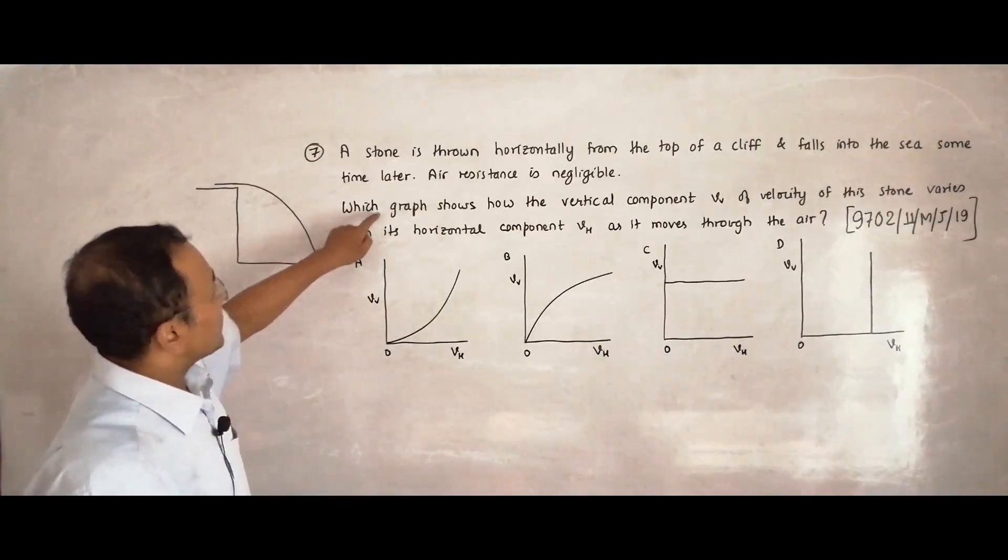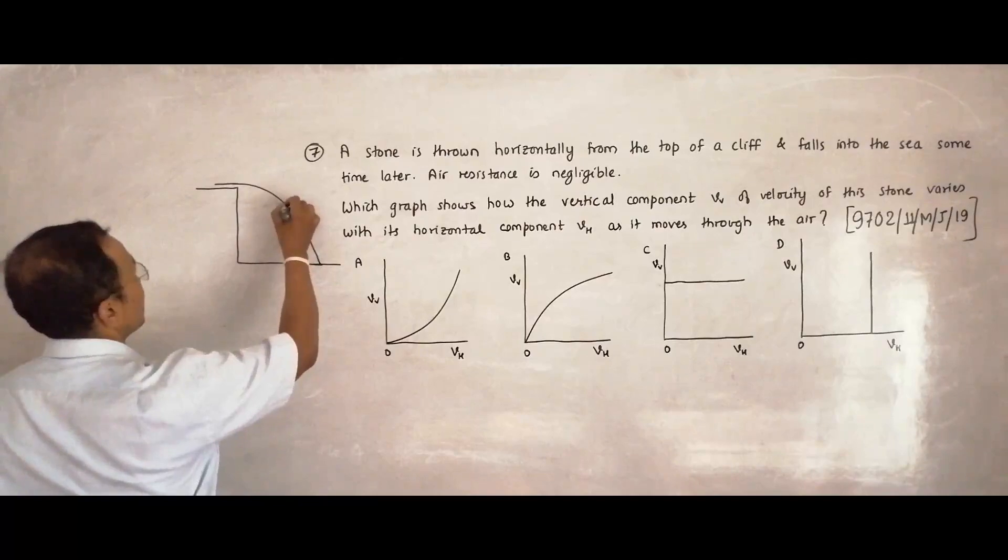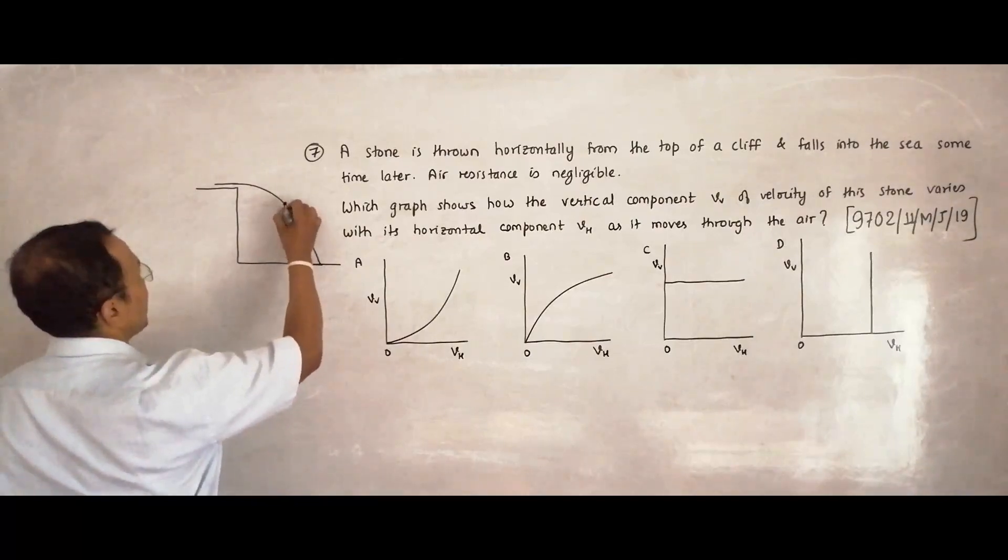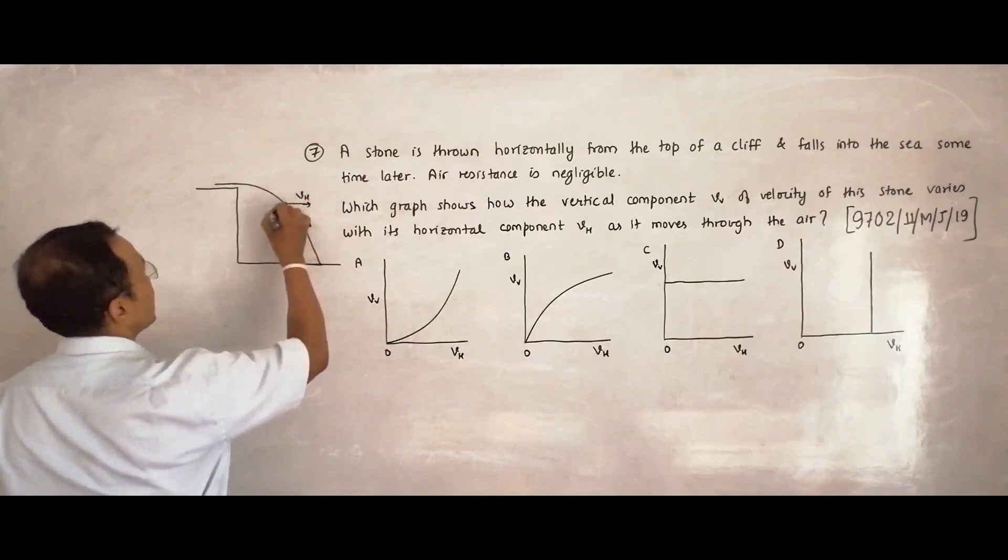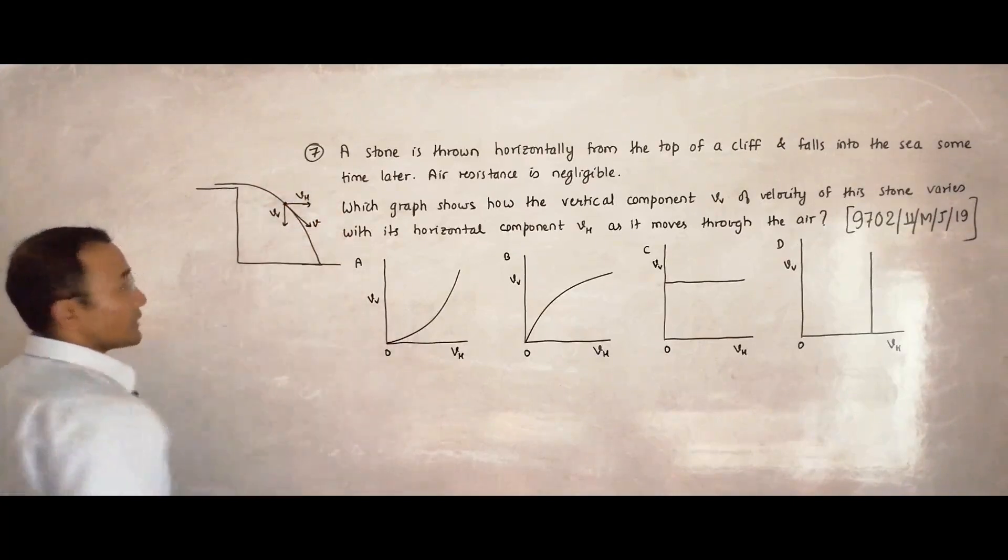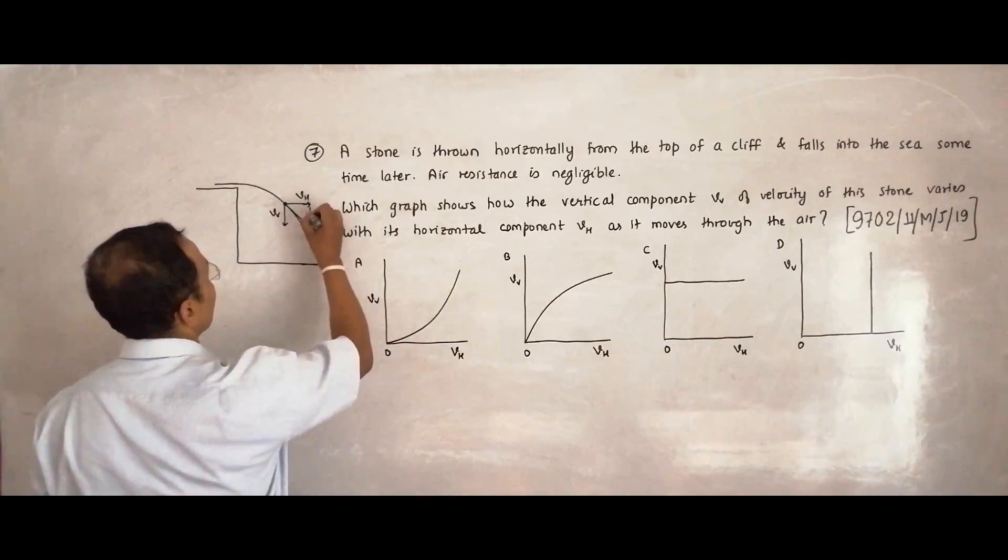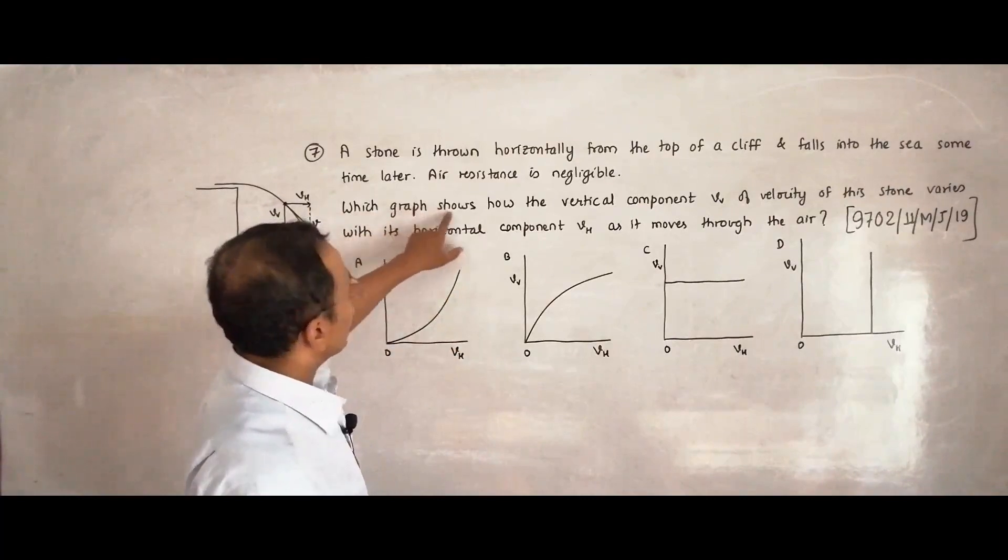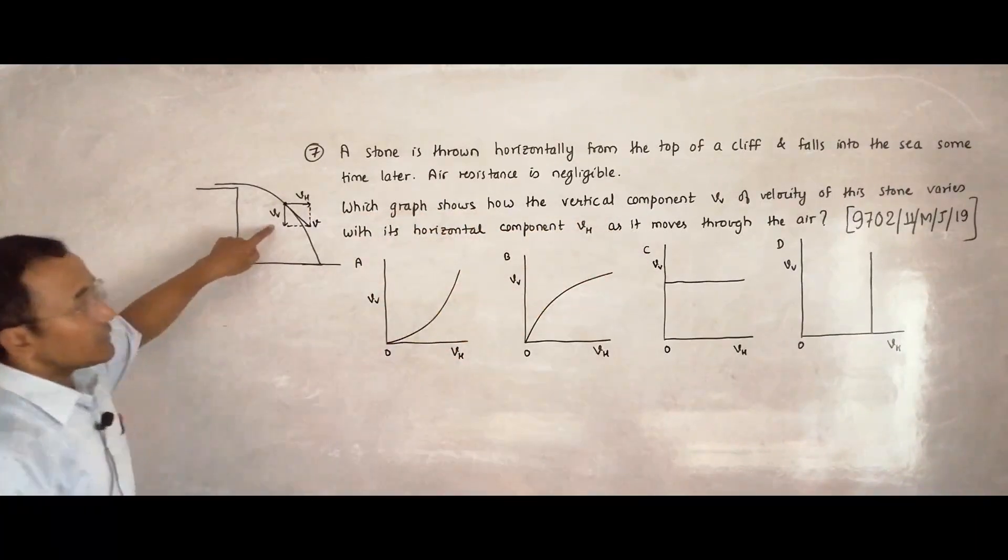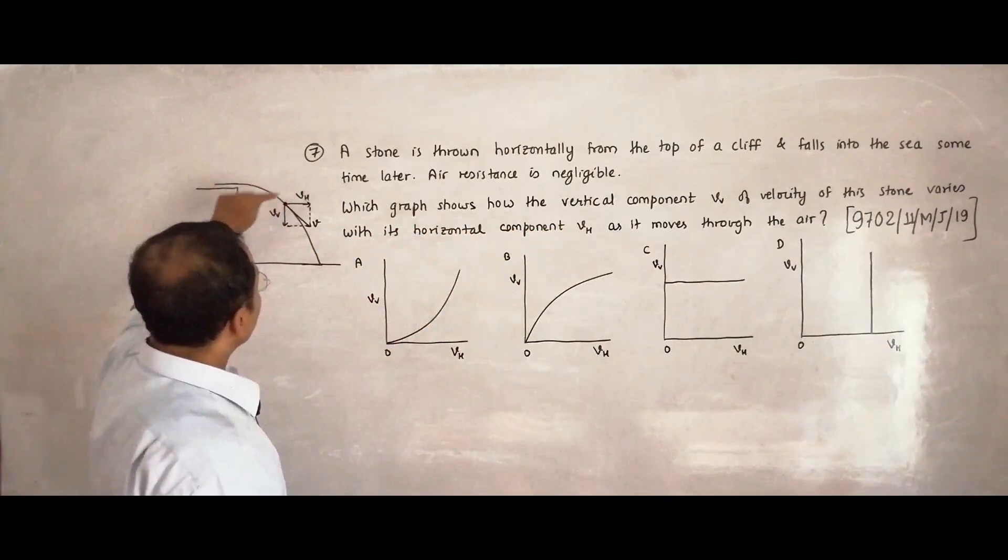That means the only force on the body is the force of gravity. So we have to find which graph shows how the vertical component VV of velocity. So when it reaches here, the vertical component of velocity is this and this is the horizontal component. So which gives the resultant like this. So this is the resultant, this is the horizontal VH, this is V vertical and this is the velocity at that moment. The magnitude of the velocities will be such that this figure will be a rectangle.